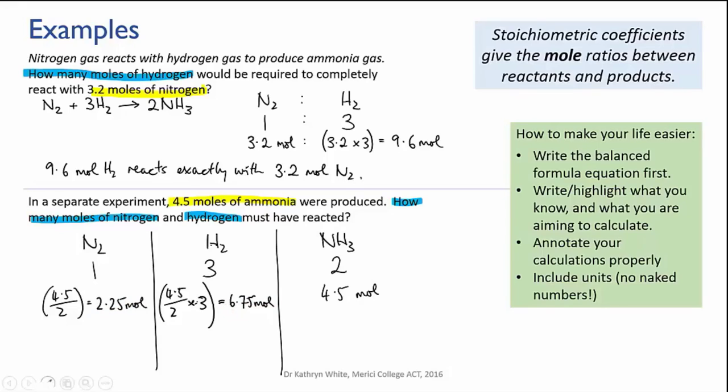Now let me highlight these last two points on my list of tips here. Always annotate your calculations. By this I mean, write explicitly what it is that you're calculating in each step. In simple problems like this, it won't seem like it makes much difference. But as your stoichiometry calculations become longer and more complex, it becomes easier to make silly mistakes by accidentally mixing up values.